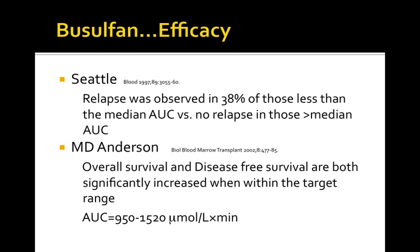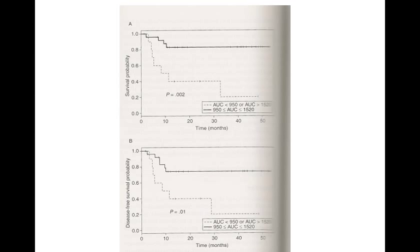MD Anderson added data in 2002 showing that overall survival and disease-free survival were increased when patients were within the target AUC range, very close to the original Seattle range. Survival curves demonstrate this clearly.